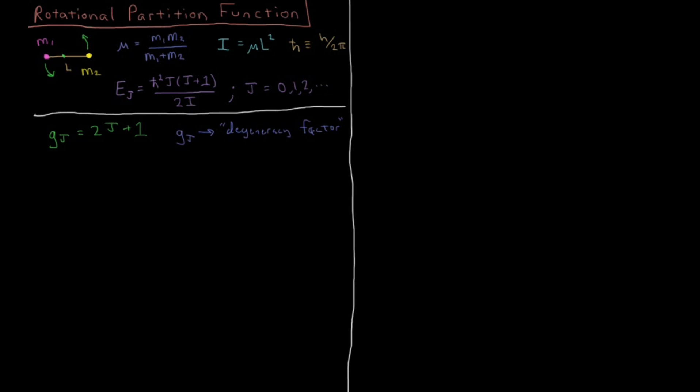We need to modify our equation for the partition function very slightly when we have degenerate states like this. Q is still going to be a sum over all of the states, with some index j. But now instead of just being the Boltzmann factor, e to the minus ej over kbt, or equivalently e to the minus beta ej, we also need to insert this degeneracy factor in front, g of j.